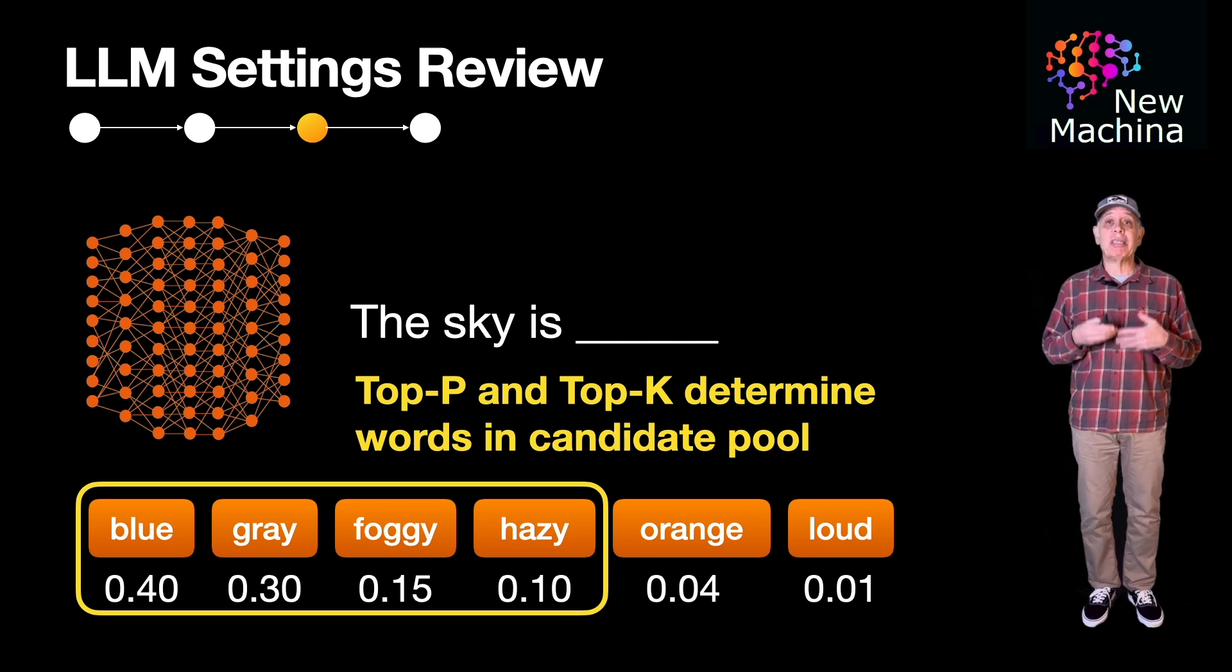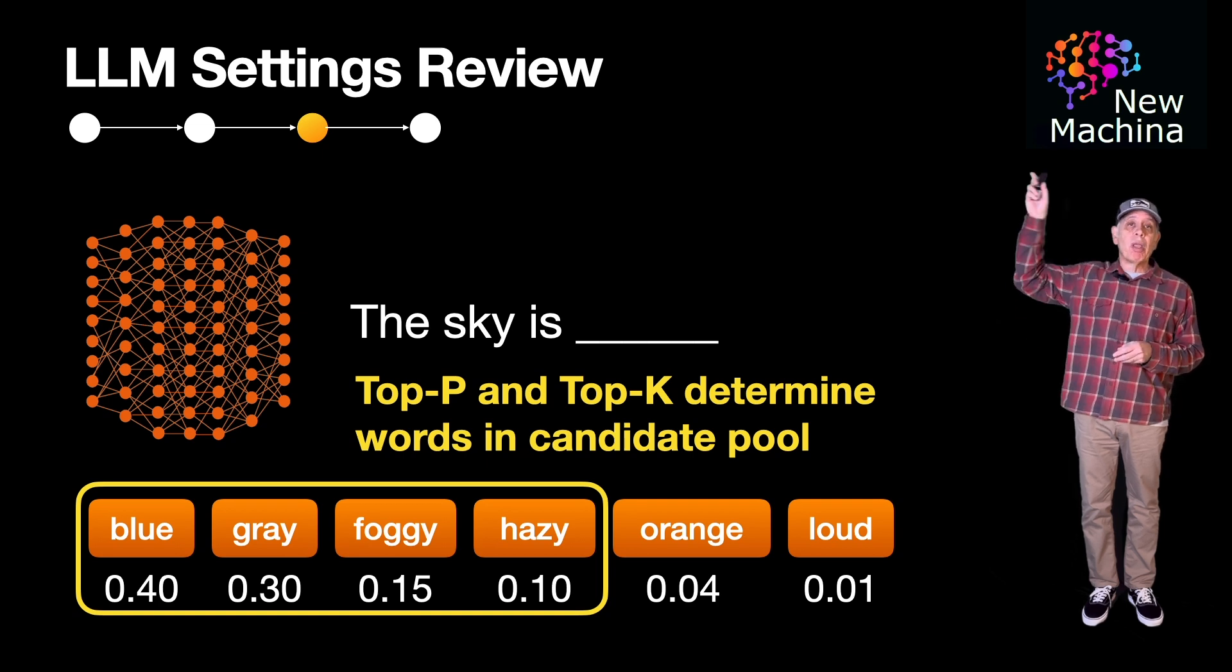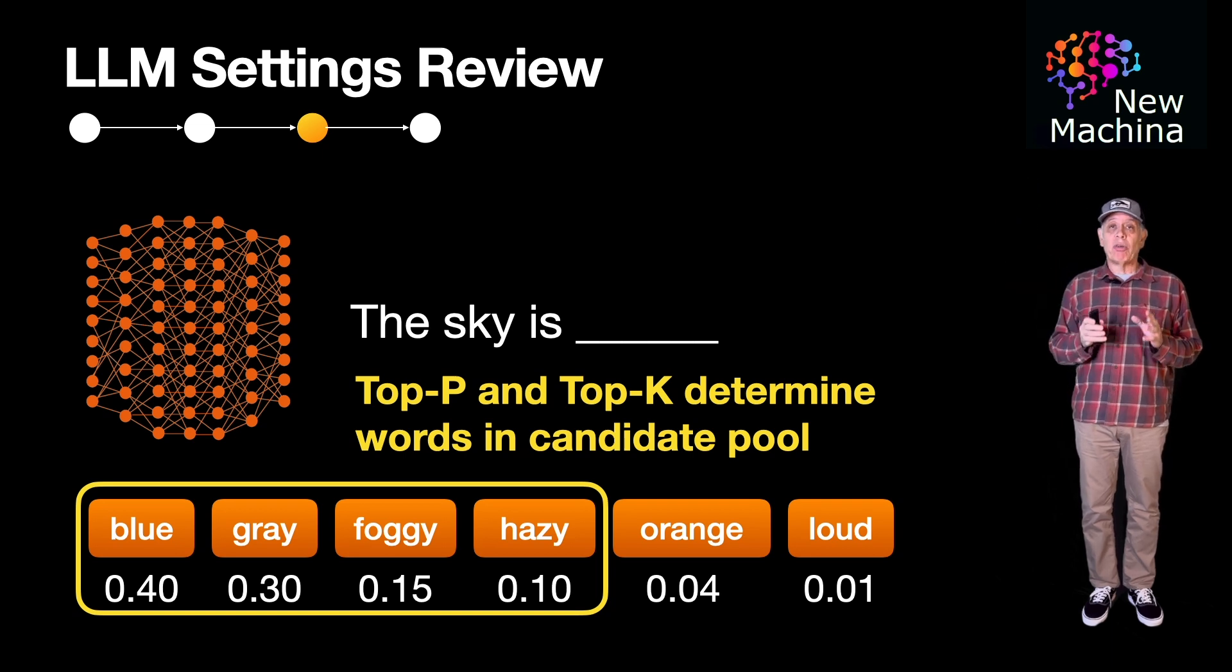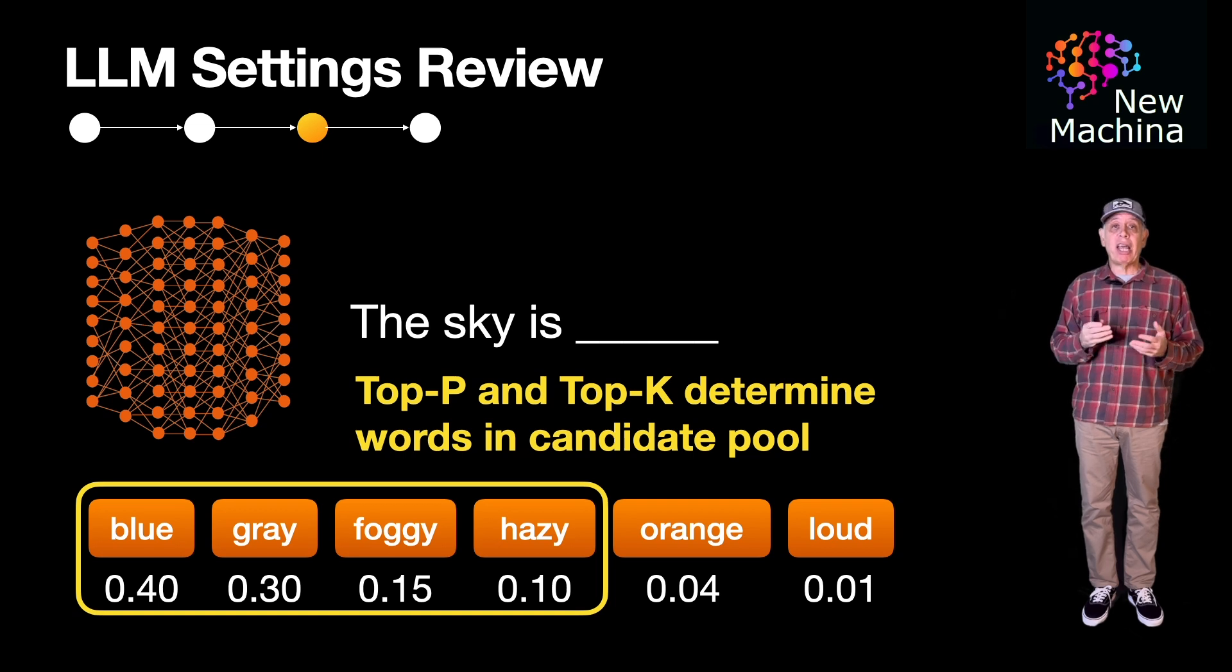Okay, feel free to check out my video on LLM temperature where I cover this LLM setting in more detail. Okay, so now you should understand what Top-P and the Top-K settings are used for and how they allow you to limit the candidate words your LLM will use when generating responses.